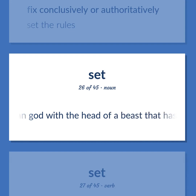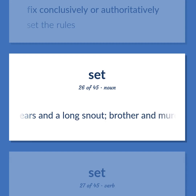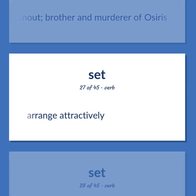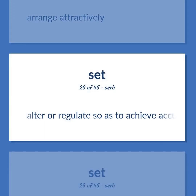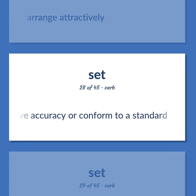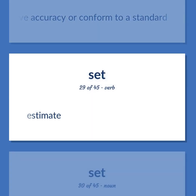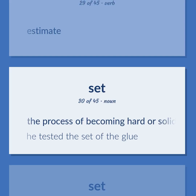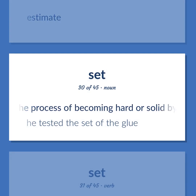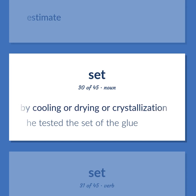Set: Evil Egyptian god with the head of a beast that has high square ears and a long snout; brother and murderer of Osiris. Arrange attractively. Alter or regulate so as to achieve accuracy or conform to a standard. Estimate. The process of becoming hard or solid by cooling or drying or crystallization. Example: He tested the set of the glue.